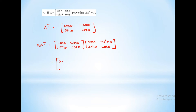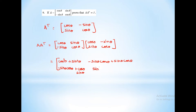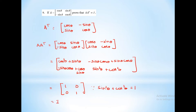Computing the elements: first row, first column: cos²θ plus sin²θ. First row, second column: minus sin θ cos θ plus sin θ cos θ, which is 0. Second row, first column: minus sin θ cos θ plus cos θ sin θ, which is 0. Second row, second column: sin²θ plus cos²θ equals 1. Since sin²θ plus cos²θ equals 1, the result is 1, 0, 0, 1 which equals I. Hence proved.